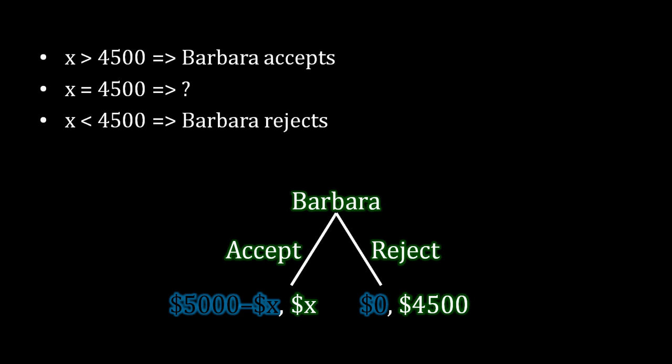On the other end of the spectrum, if x is less than $4,500, then Barbara has to reject. That's because Barbara values the car at $4,500. So if Albert is offering her less than how much she values it at, of course she's going to reject. That leaves this middle case at exactly equal to $4,500 as unclear.